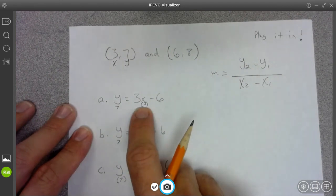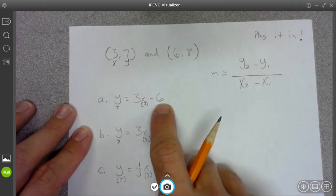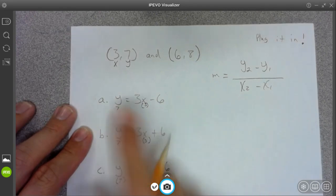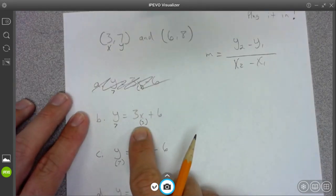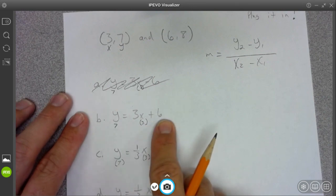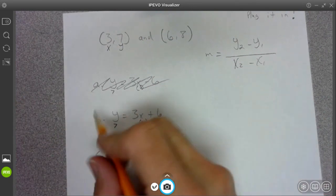Alright. Three times three is nine. Nine minus six. Well, that's three, which is not equal to seven. Three times three is nine. Nine plus six is 15. Well, that's not equal to seven. Dang it.